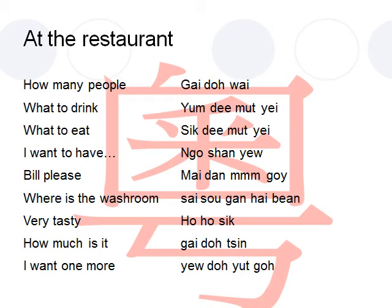If you order a dish and find out that it's not enough and you want one more, you should say 要多一個. It translates to want one more. So I want one more in Cantonese is 要多一個.